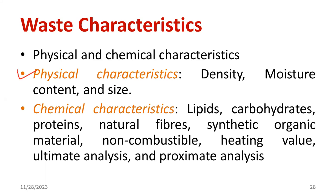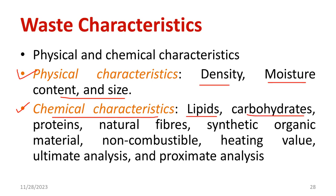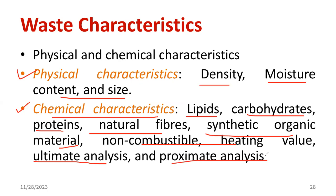Moving on to the physical characteristics. Consider a certain amount of waste — we need to consider its density, then moisture content, size, etc. For chemical characteristics, in the group of waste, we can see lipids, carbohydrates, proteins, natural fibers, synthetic and organic material, non-combustible material, and heating value. We can then check the ultimate analysis to understand the composition, then proximate analysis, and verify the calorific value.